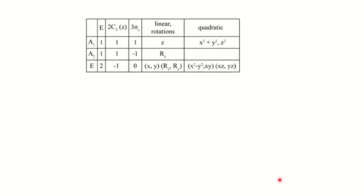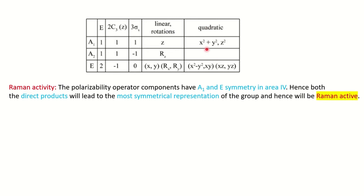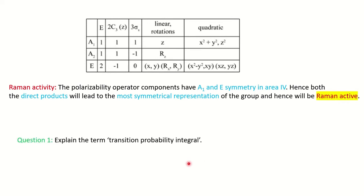Similarly, you can find out Raman activity. In the full character table of C3v, the fourth column represents Raman activity. For the quadratic functions, A1 and E representations are present. Since both A1 and E give the most symmetrical representation, these modes are Raman active as well. In this way, the direct product of two representations gives the most symmetrical one, confirming Raman activity.